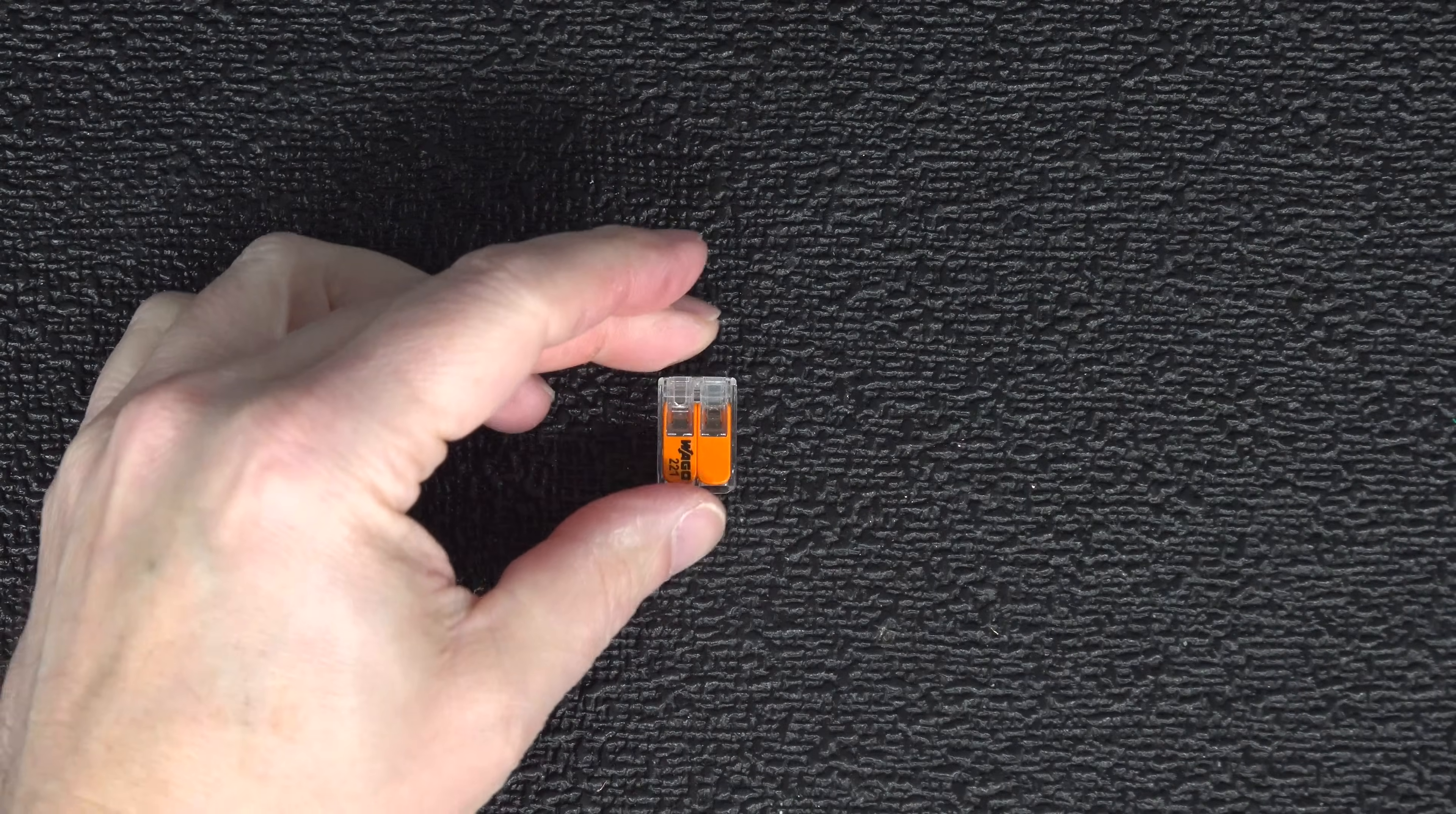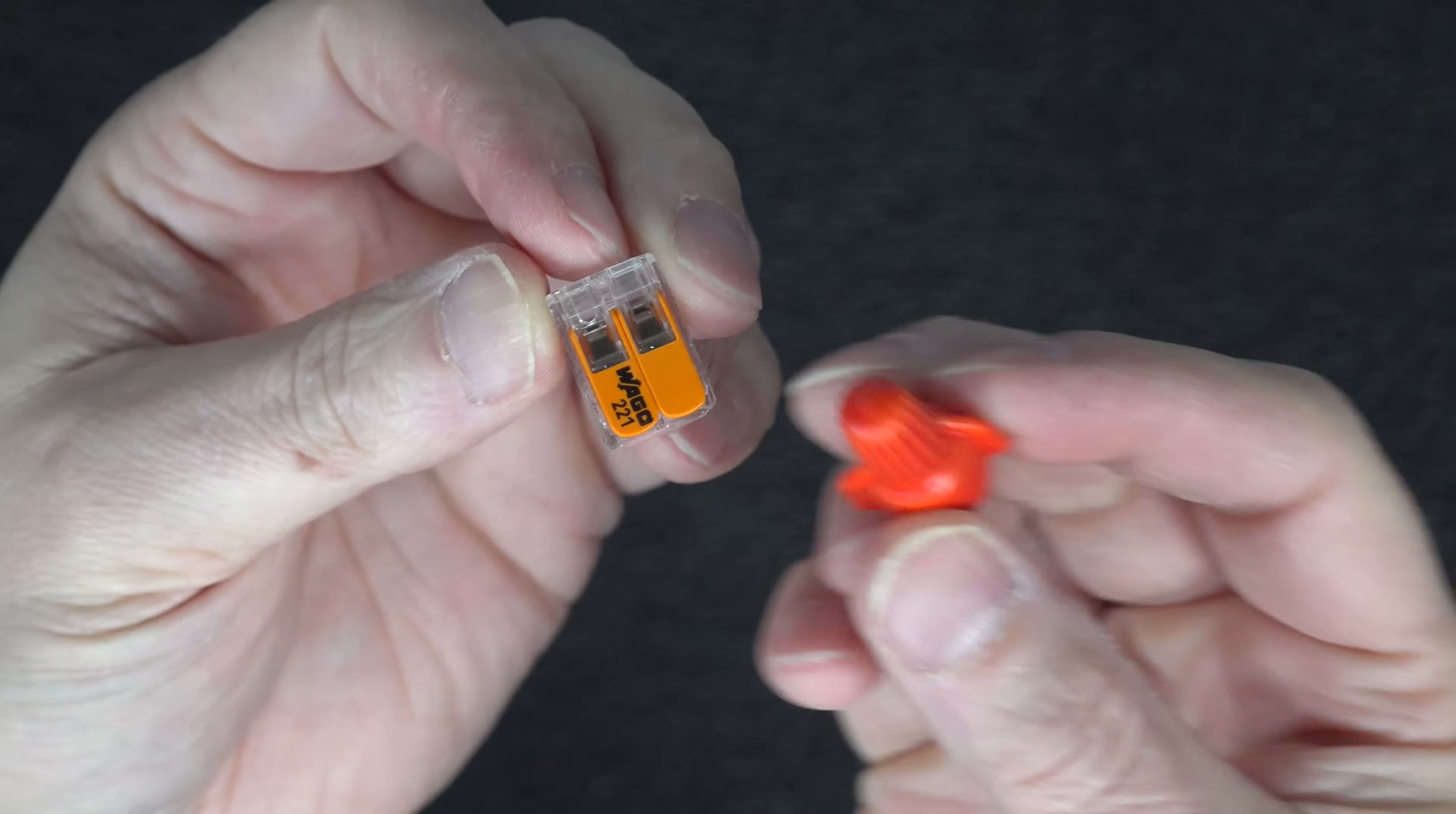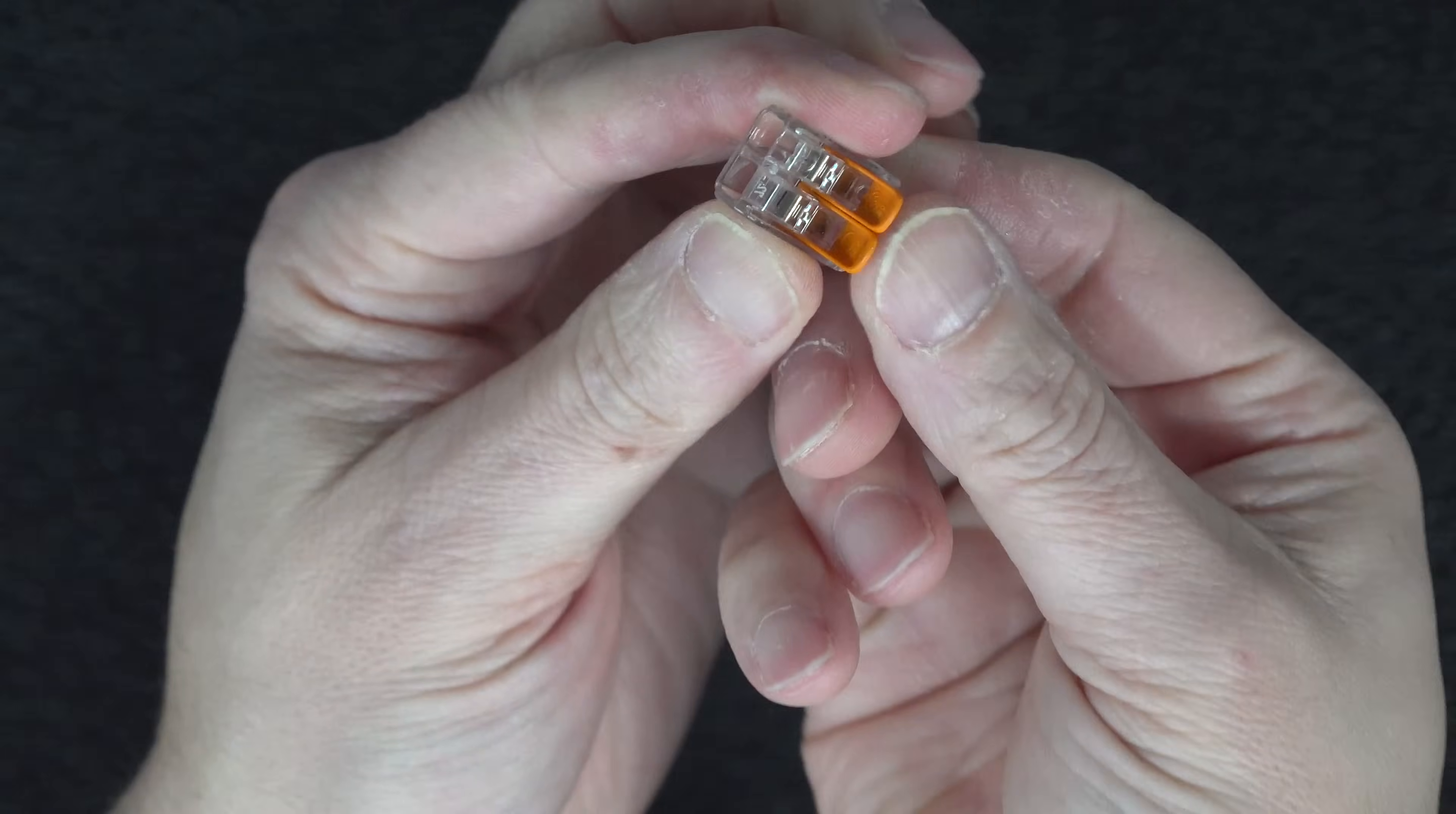But now let me show you a better way to make that connection instantly without using any tape at all. This is a Wego 221 series electrical connector, and this is going to make your life a lot easier than using any kind of wire nut. They're each equipped with these levers. You flip one up, and now you can insert a wire directly into the connector.